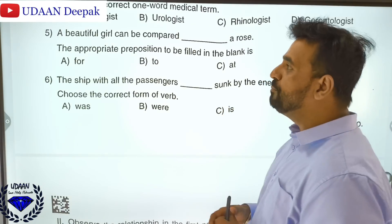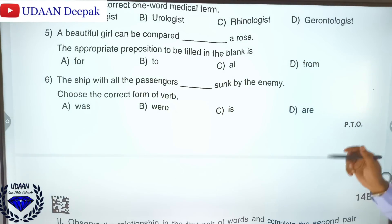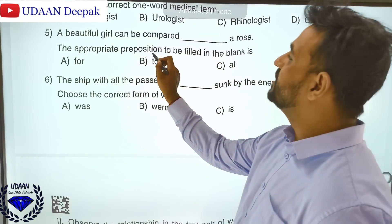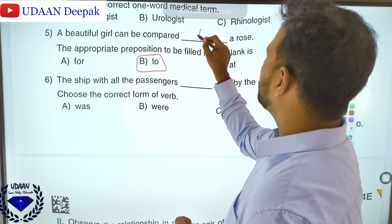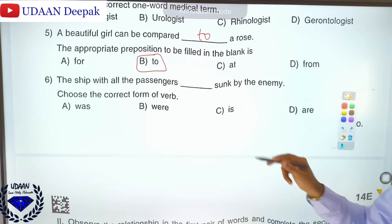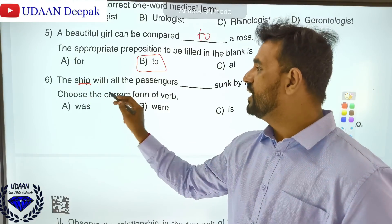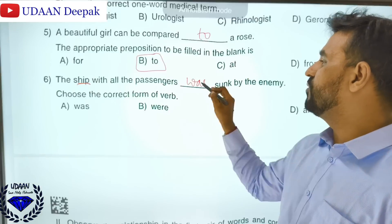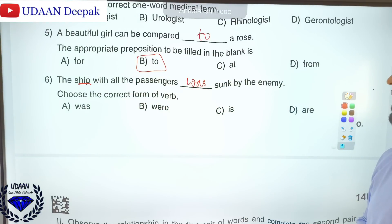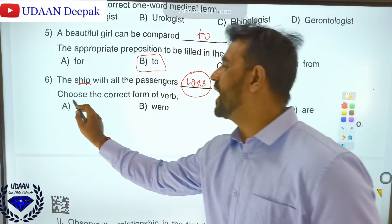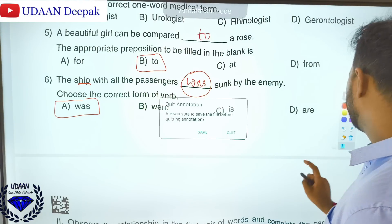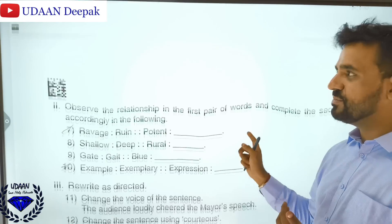Moving to the next one — 'a beautiful girl can be compared to a rose.' The preposition here is 'to,' so the answer is 'to a rose.' For 'the ship with all the passengers was sunk by the enemy' — the ship is the subject, so the answer is 'was.' Option A: was. That is the right answer.